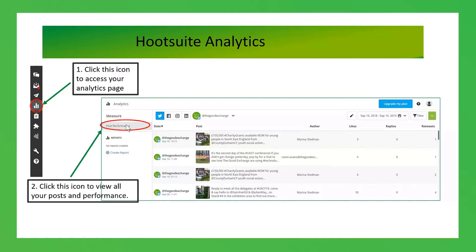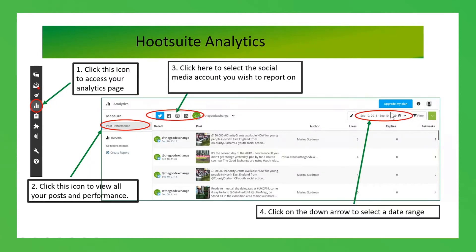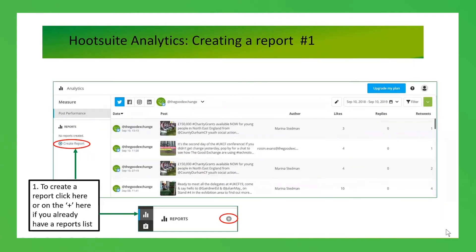If you click on post performance it shows you how your posts are performing in that time frame — here it's September. Click on the social media account you wish to report on, click the down arrow and you can select a date range. Here I'm looking at a year from September 2018 to September 2019. To export the report, click on the down arrow and choose PDF or CSV.